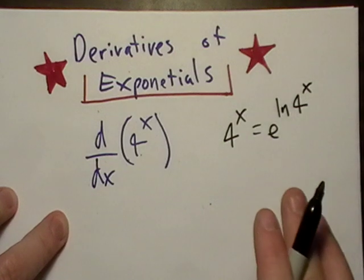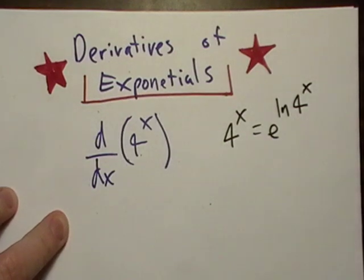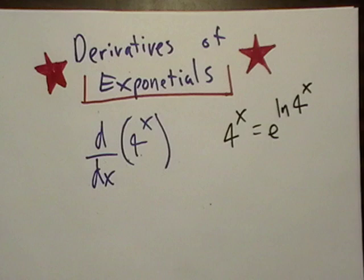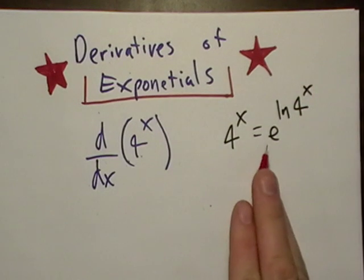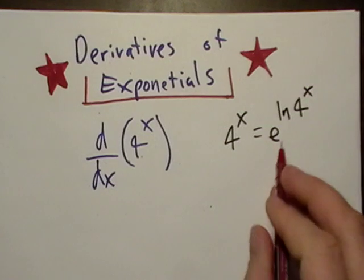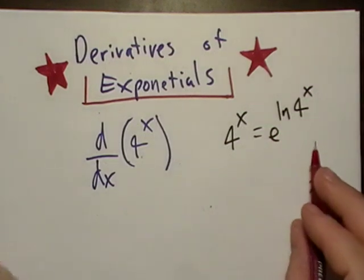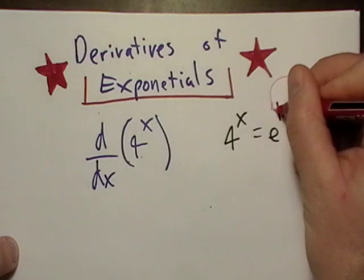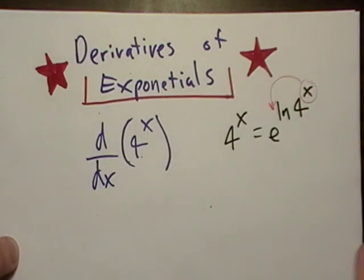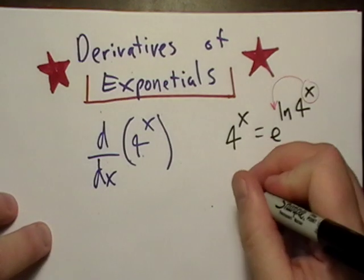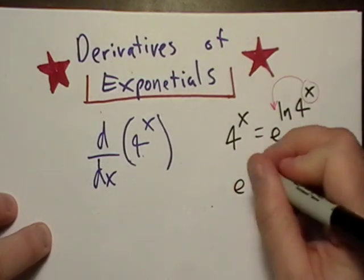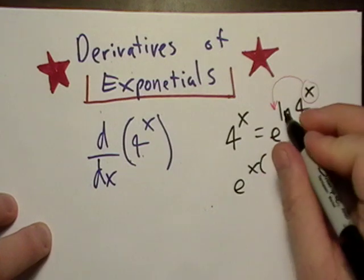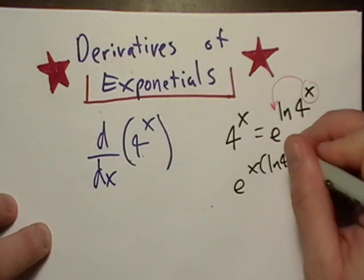If you didn't remember that, don't worry. Everybody forgets it, including yours truly. The next thing we need to know though is there's also, aside from this little identity here, there's this little log power rule that basically says we can stick the x back in front. Let's go ahead and do that right now. e to the x, and I'm going to parenthesize the natural log of four.